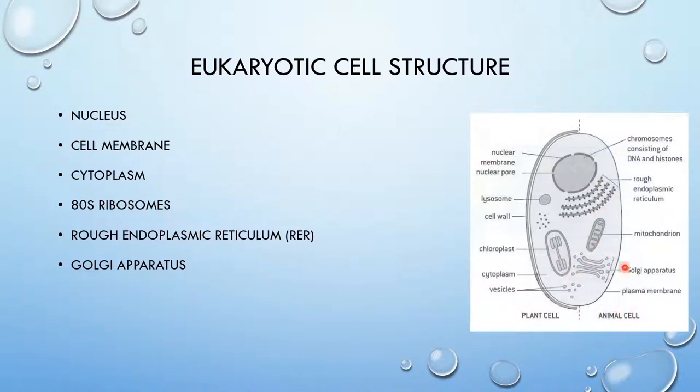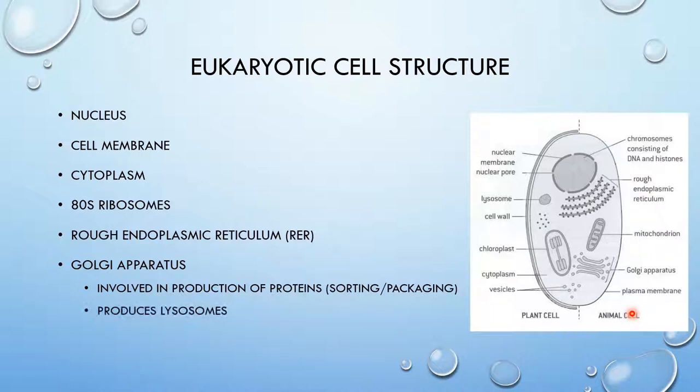The Golgi apparatus looks like that. I have electron micrographs in a future slide that you guys could probably see all these structures. They're involved in the production of proteins, the sorting of proteins, packaging of proteins. They also produce lysosomes, which are right there.